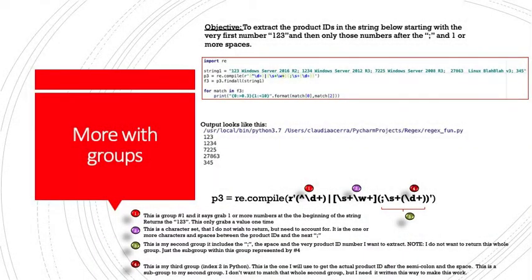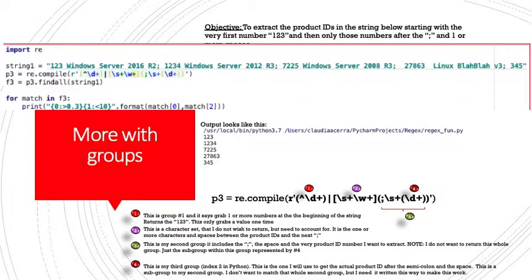Let's try another challenge using the very useful groups that we've learned about. The objective here is to extract the product IDs in the string below, starting with the very first number, 1, 2, 3, and then only those numbers after the semicolon and one or more spaces. These are just a few lines of code, but they do quite a lot. We're using this in a script this time, so it's not a Python interactive. So we import re as we always have to, regardless of what method we're using. Then we take a look at our string.